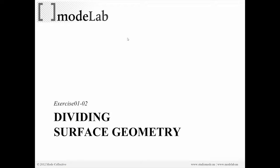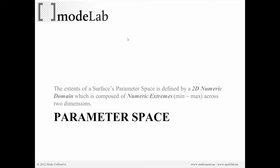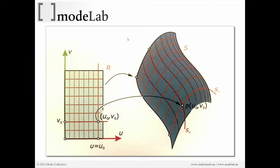Now that we've explored surface geometry, we want to look at how we can divide the surface up into smaller parts. If we look at the parameter space, the numerical description of that parameter space is based on a two-dimensional domain composed of two one-dimensional domains, each defined by their numeric streams — a min and max describing that space in the U and V dimensions. We can use sub-segments of that two-dimensional space, represented here as a grid, where each rectangle is a kind of sub-segment of the two-dimensional domain.